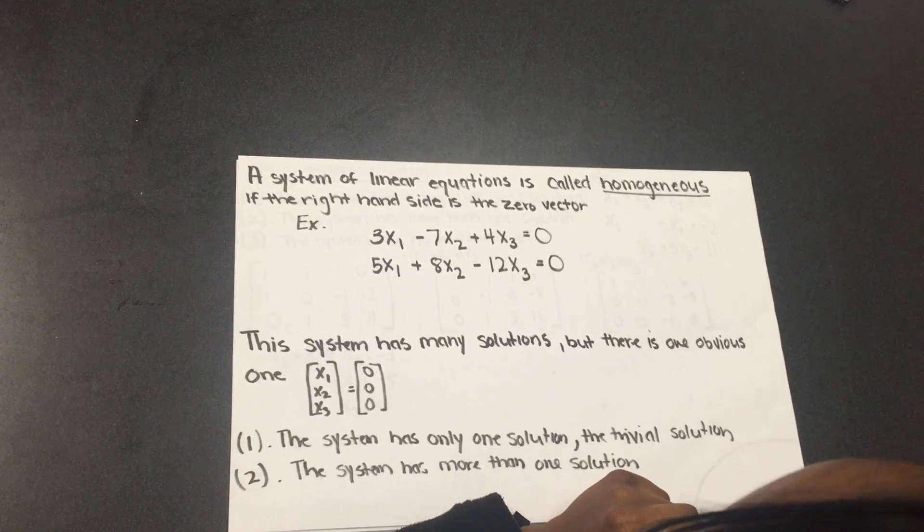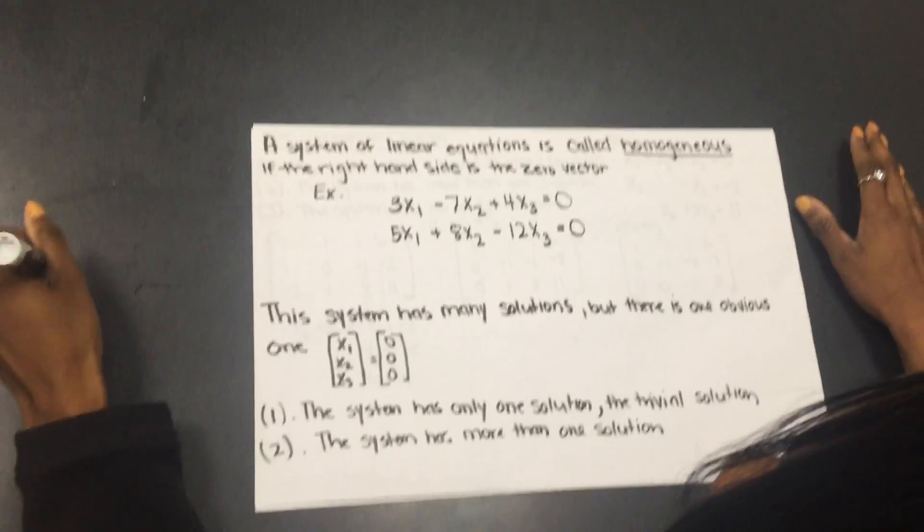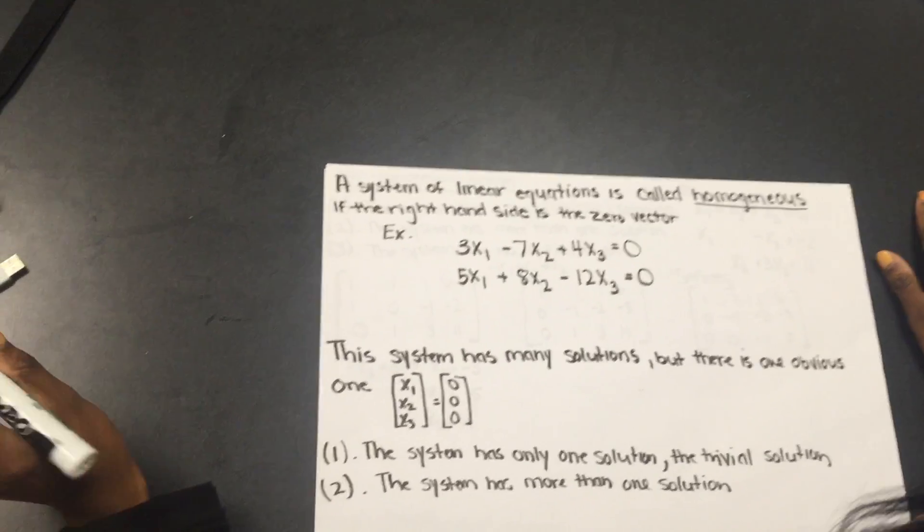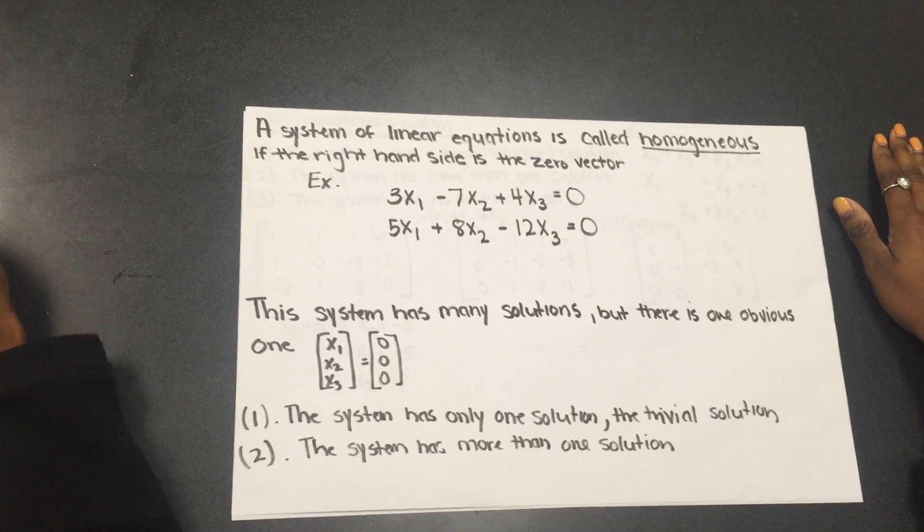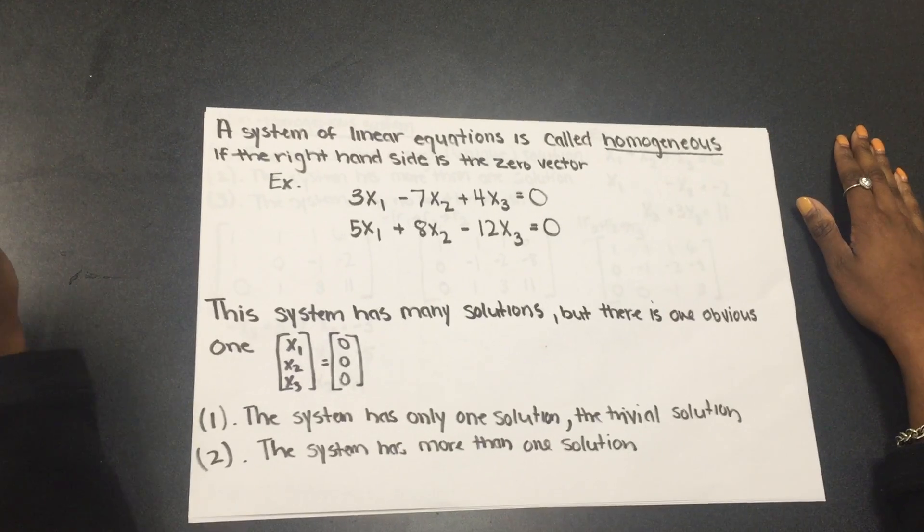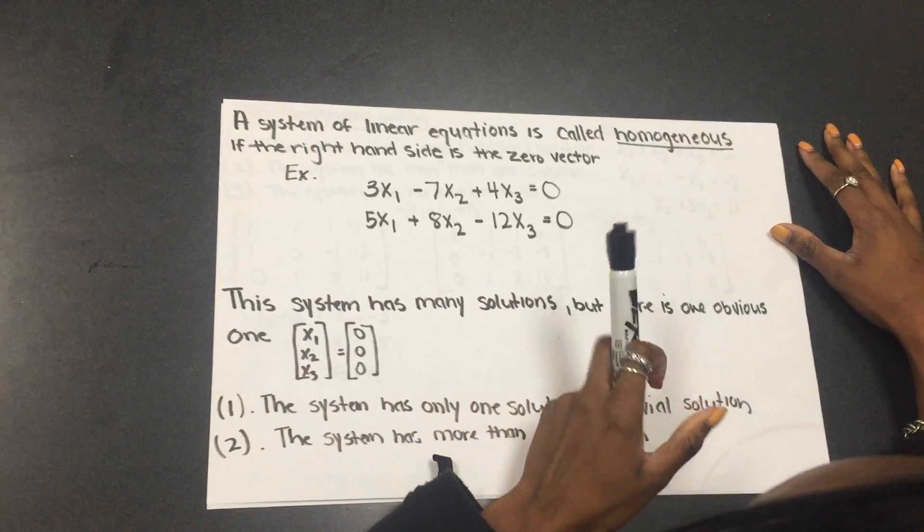Hello. Today, my name is Alexis Carver, and today the lesson is homogeneous and non-homogeneous systems. So, a system of linear equations is homogeneous if the right-hand side of it is the zero vector. An example is this system of equations right here.